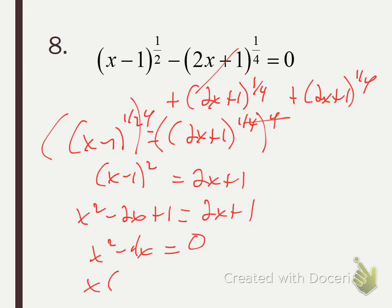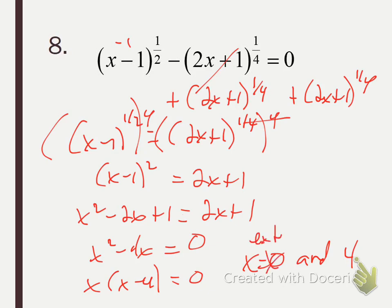Factor out a GCF of x, and we get two solutions: 0 and 4. Quick check: plug in 0 — 0 minus 1 is negative 1, and the square root of negative 1 we can't do, so 0 is extraneous. Plug in 4 — 4 minus 1 is 3, so we have the square root of 3; 2 times 4 is 8, plus 1 is 9, and the fourth root of 9 equals the square root of 3. So the square root of 3 minus the fourth root of 9 equals 0 — that works. Your solution is x equals 4.